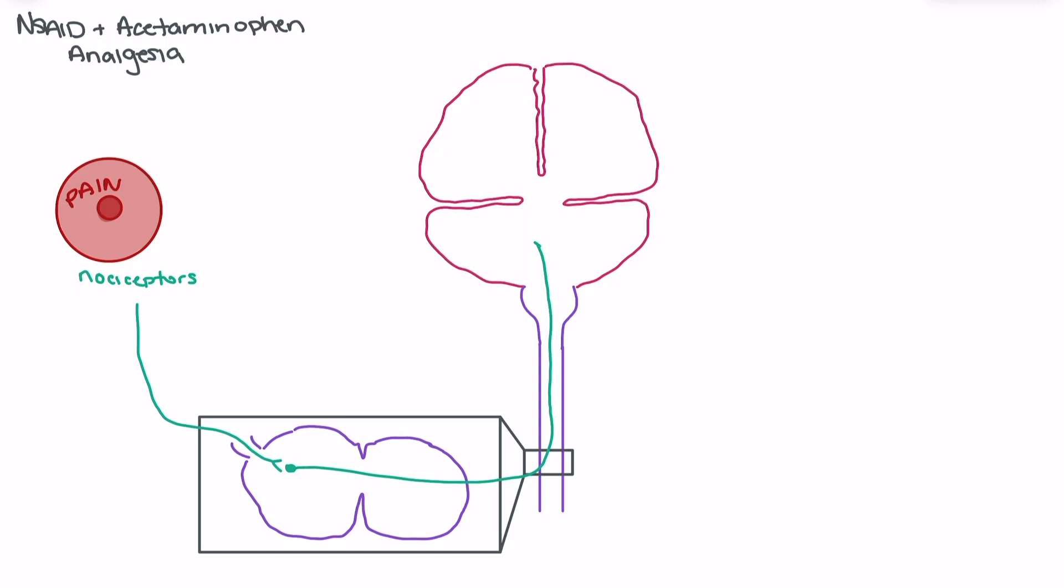And then finally, these transmit that signal to the brain and to the areas of the brain that perceive pain. So it comes from the periphery, moves through the spinal column, and goes up towards the brain to perceive pain.